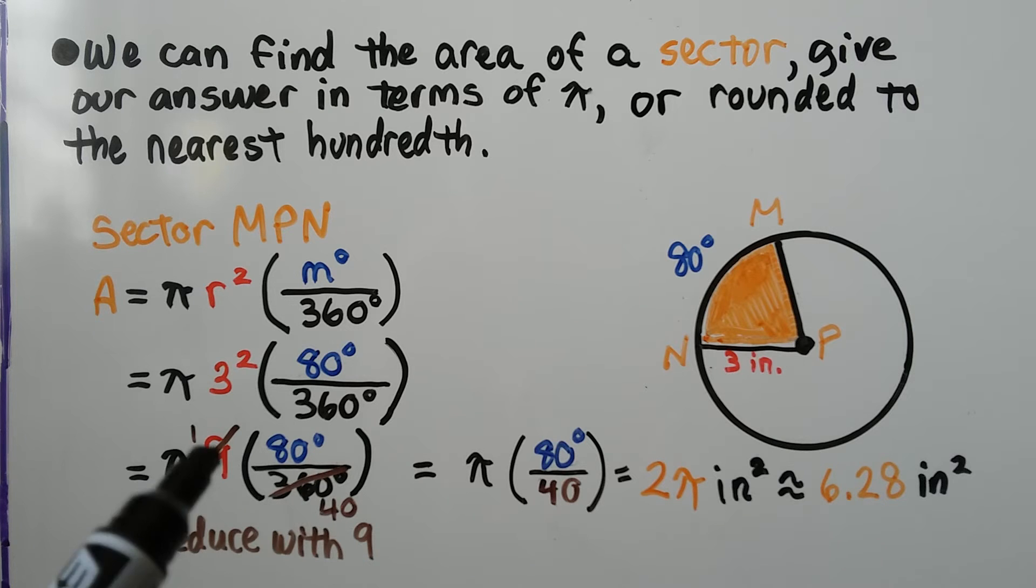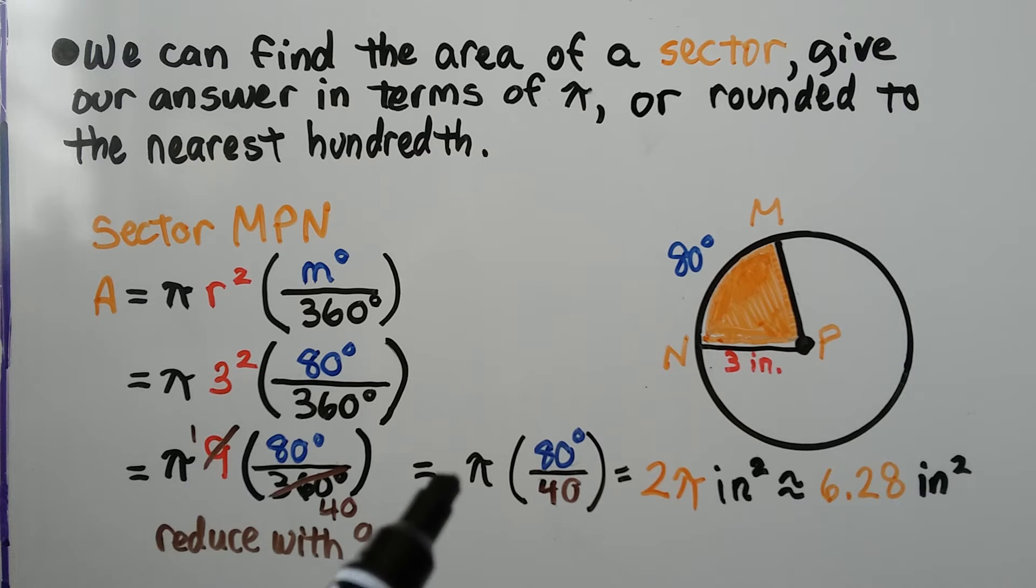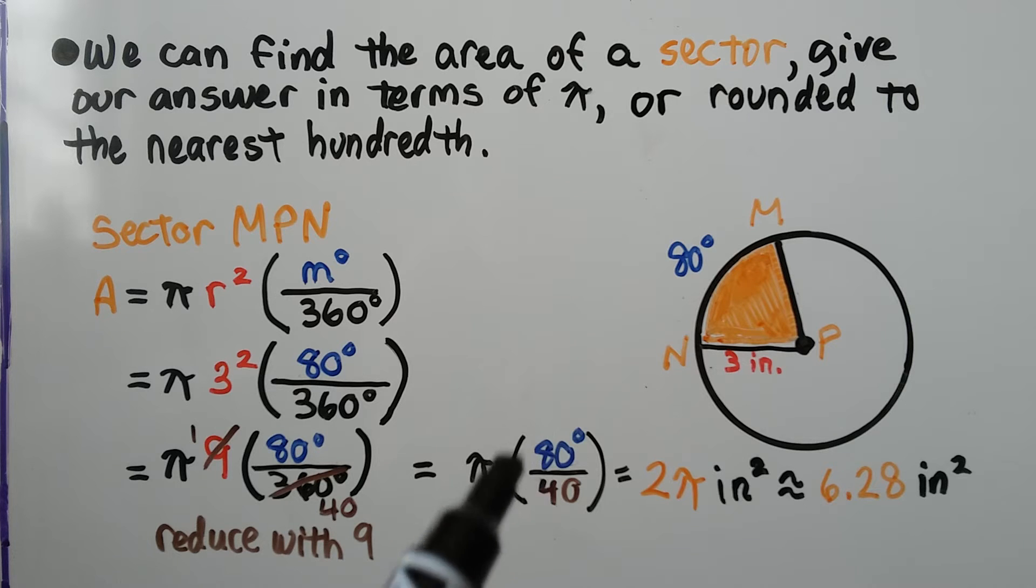So we have one nine going into the 360 forty times, so that's canceled out. We end up with pi times the quotient of 80 degrees and 40, and that's equal to two. So our answer is two pi inches squared. On our calculators, we can see it's 6.28 inches squared.